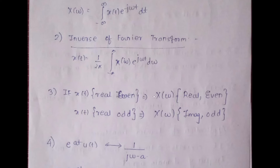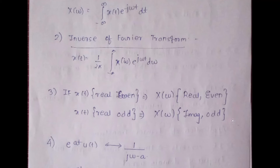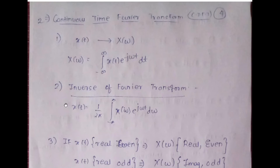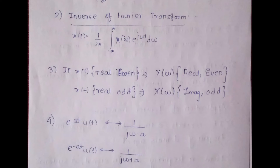A basic theoretical property: if x(t) is real and even, then X(ω) is also real and even. Similarly, if x(t) is real and odd, then X(ω) is imaginary and odd. This can appear as a theoretical question or be applied in numericals. Remember: X(ω) = integration of x(t) e^(−jωt) dt, and x(t) = (1/2π) integration of X(ω) e^(jωt) d omega.